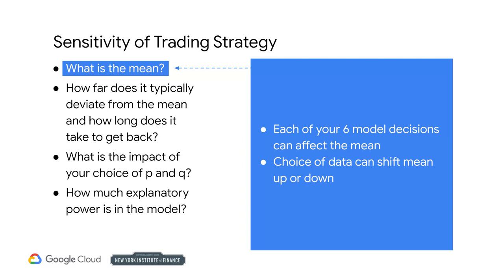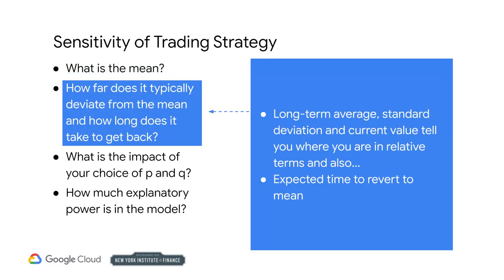You can choose a P and a Q, which gives you the form of the model. You estimate the slopes and intercept accordingly, giving you the value of the estimates. Using the values of the coefficients, you can determine the long-term average. You can also determine how far the series typically deviates from the mean. You can observe the current value, so the model can tell you where you are in relative terms between the average and the expected deviation.